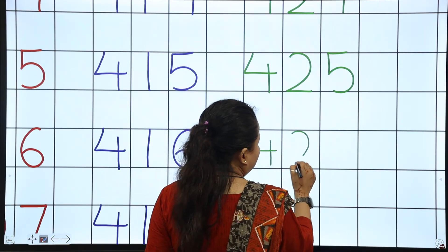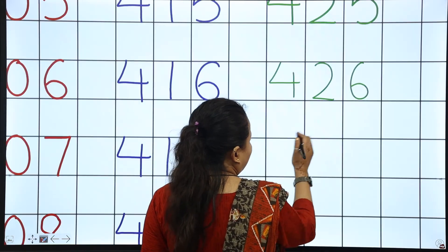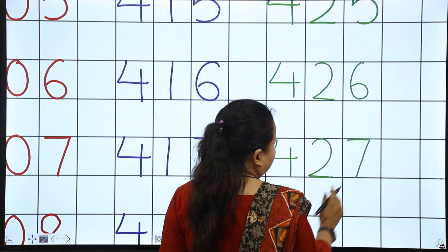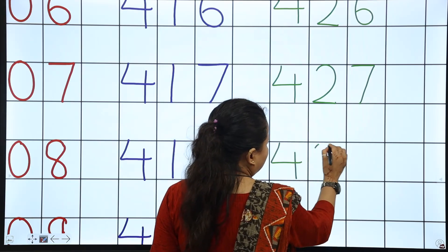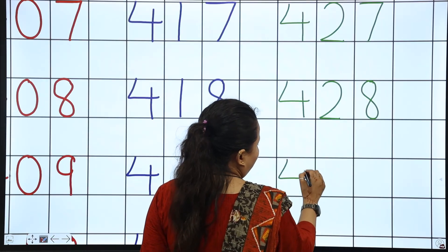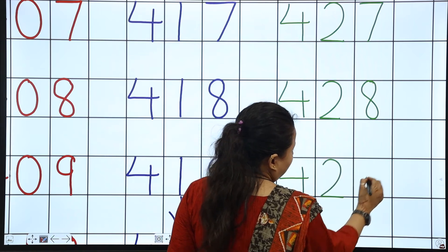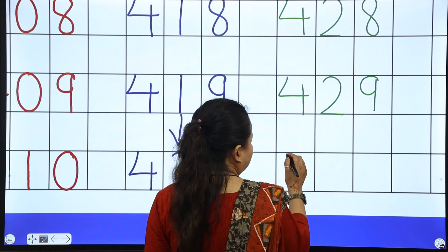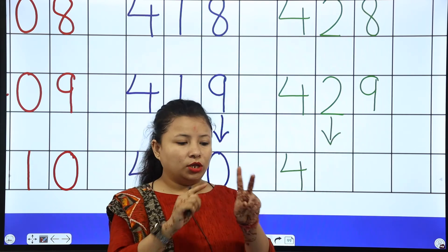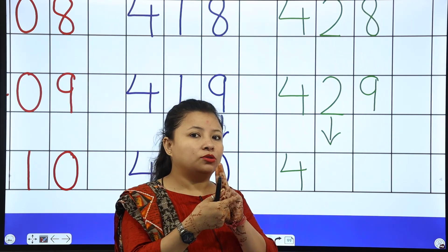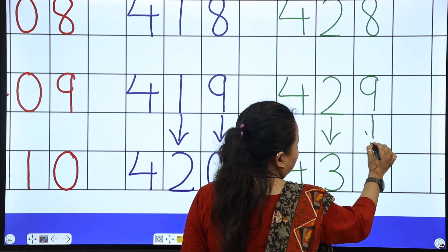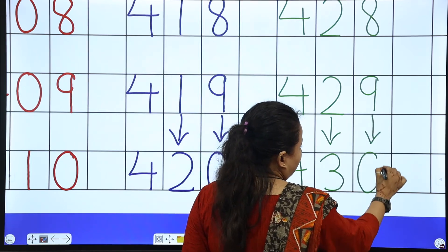425. Now next is 426, 427, 428, 429. And the next and last number of this line is 400. This is 2. Okay. So 1, 2, next number is 3. So after 2, 3. And after 9, 0. That is 430.